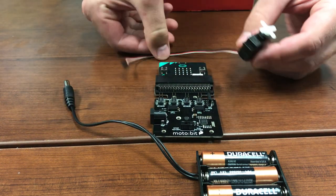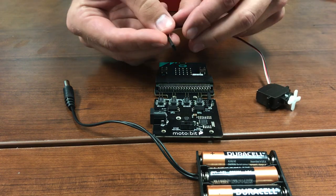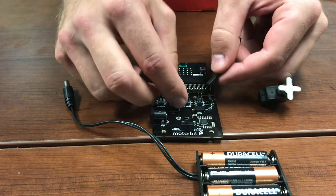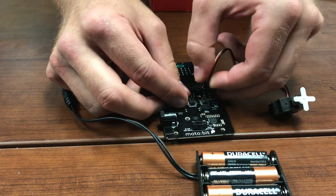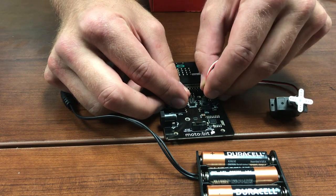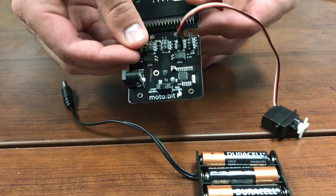For this lab we will be plugging the servo motor into pin 16 on the microbit. Remember to align the black wire with the ground pin.